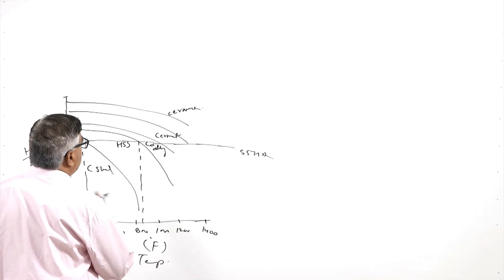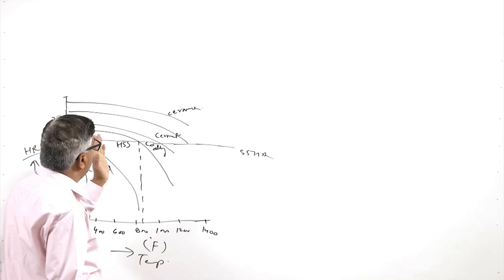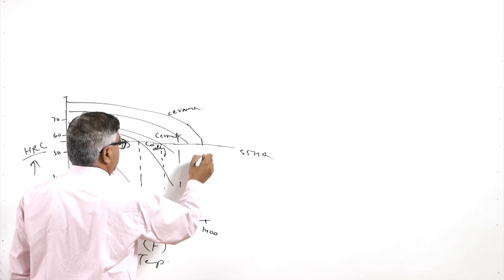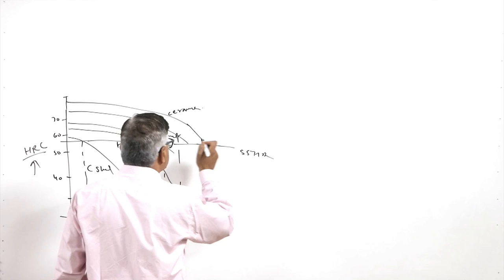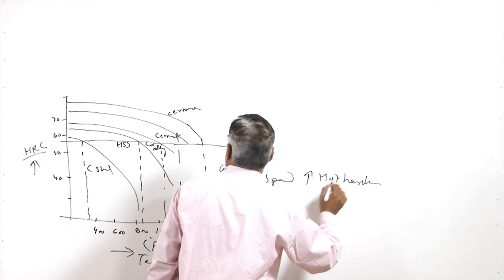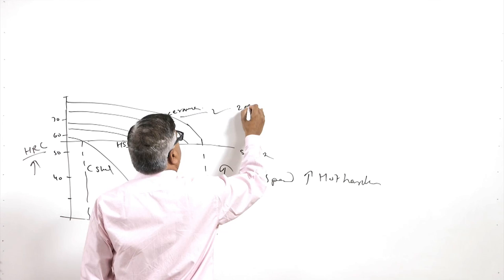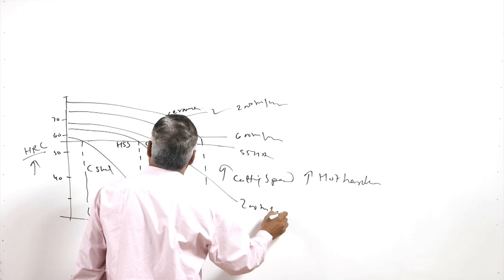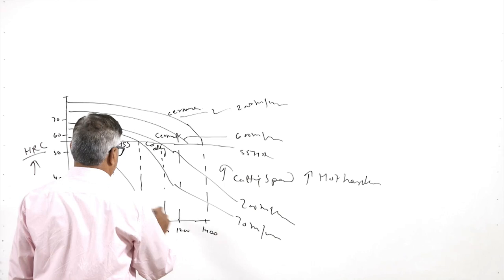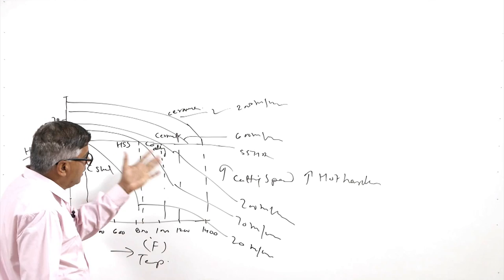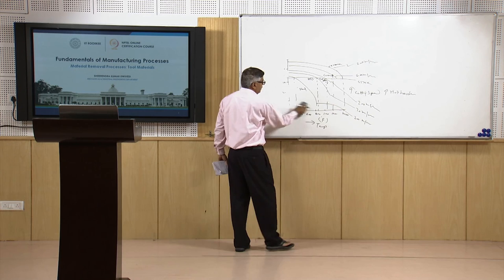If we assume the minimum required hardness for a tool working with a particular workpiece is 55 HRC, then carbon steel cannot work beyond a certain temperature and high speed steel cannot work beyond about 850°F. We need to work at lower speeds when using carbon steel or HSS. Cast cobalt alloys, cermets, and ceramics can afford much higher temperatures without losing hardness, allowing much higher cutting speeds — ceramics can work at around 2000 m/min, cast cobalt alloys around 200 m/min, and carbon steel as low as 20 m/min for steel machining.